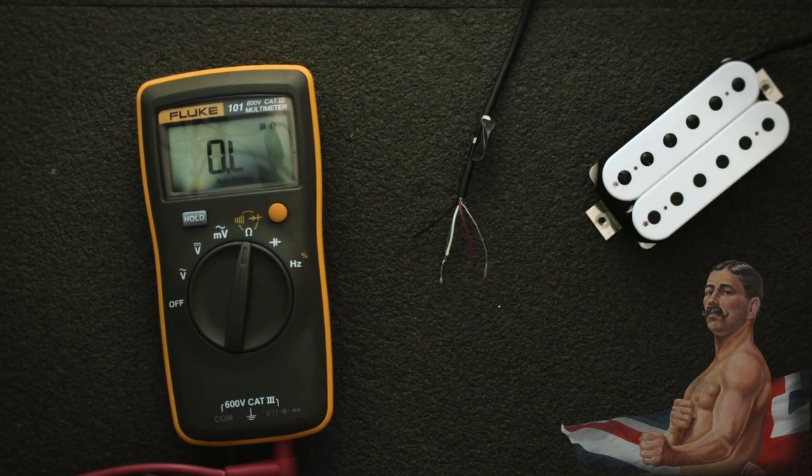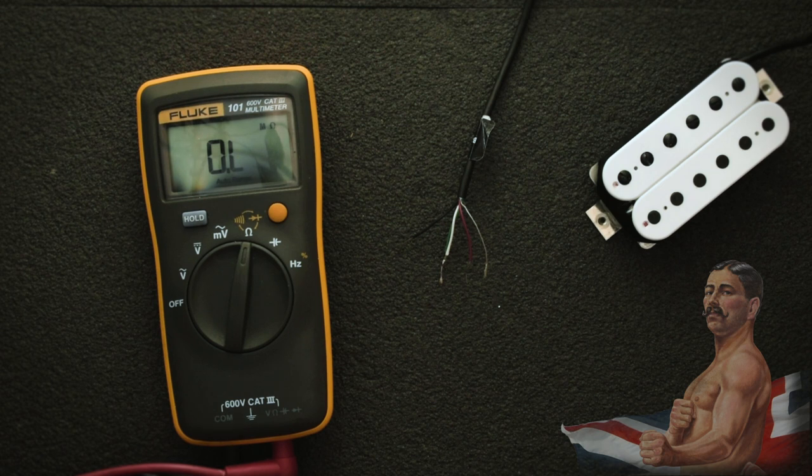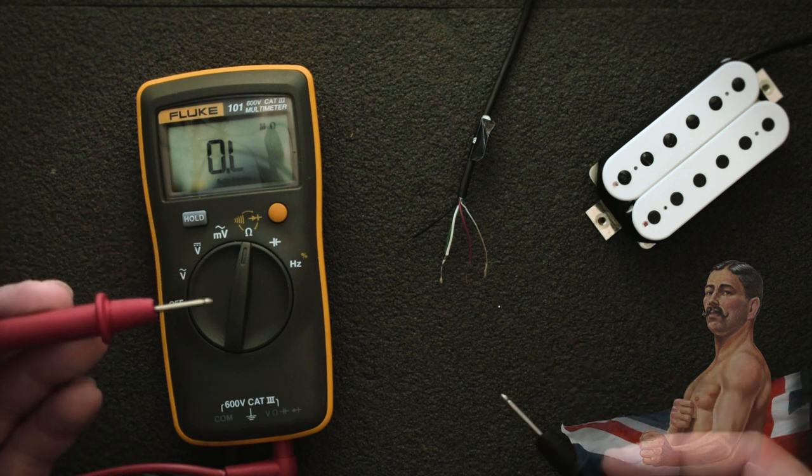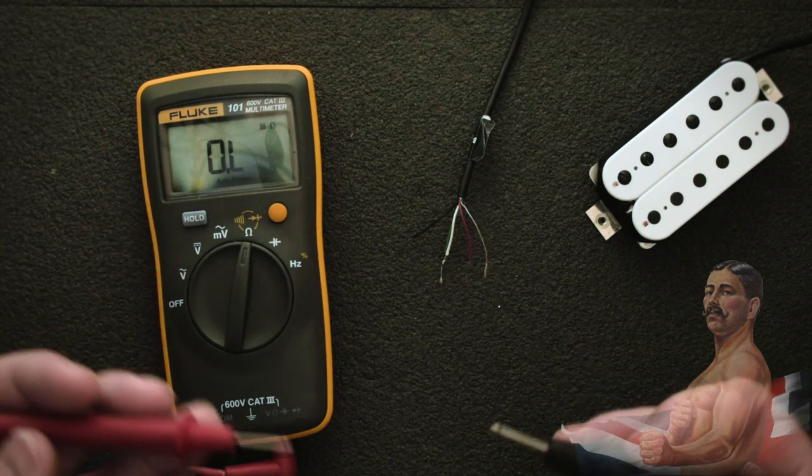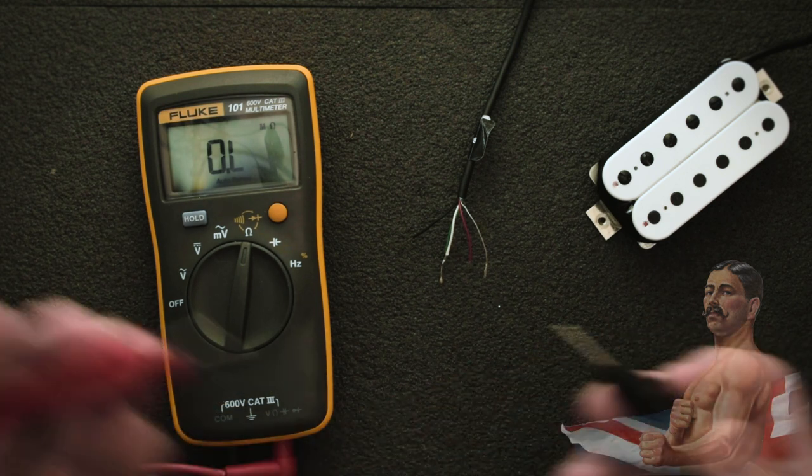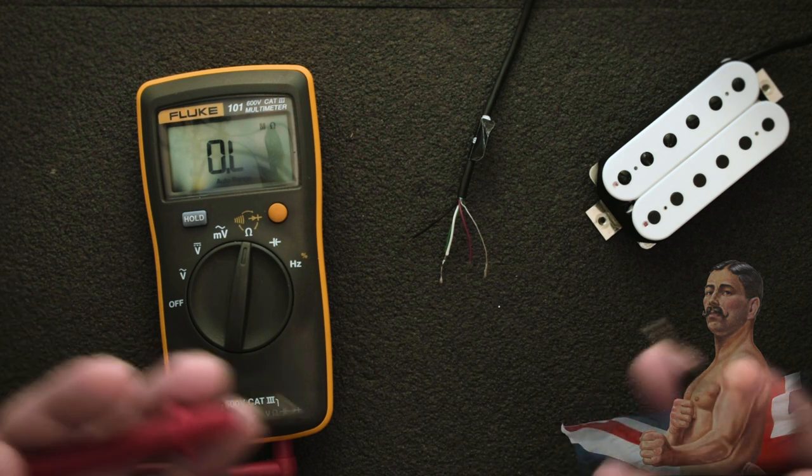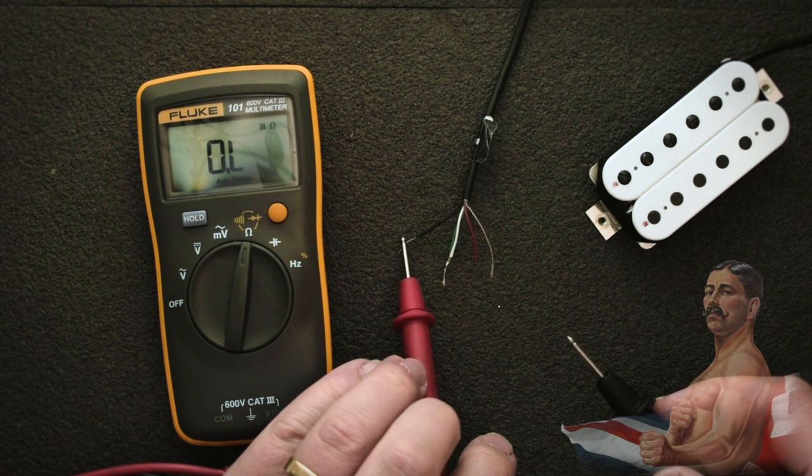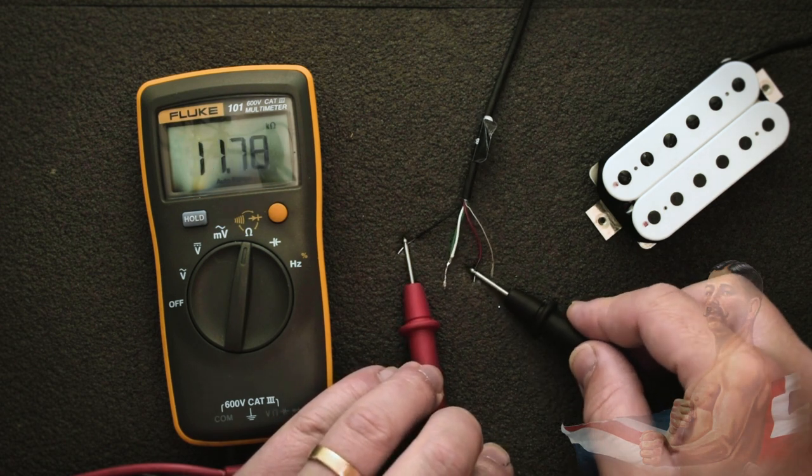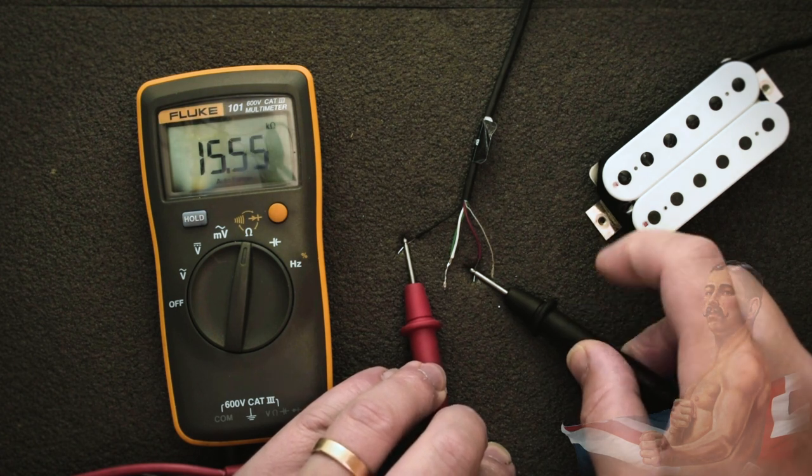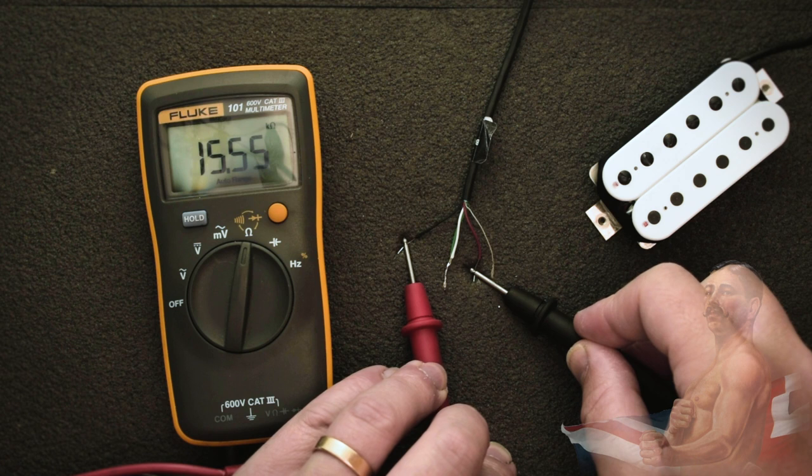The first thing we'll check is the resistance of the entire pickup as a whole. To do this we connect our probes between the red and black wires. When taking resistance measurements it doesn't matter which way around you connect the probes, there's no direction that you need to connect them because the resistance is exactly the same in a forwards or backwards direction. So if we touch one probe to the black wire and one probe to the red wire, we get a reading of 15.5 kilo ohms. This is a painkiller bridge and it's a little bit cool this morning so that's perfectly within tolerance.